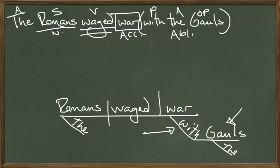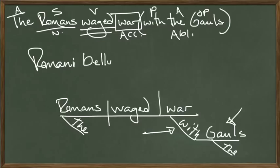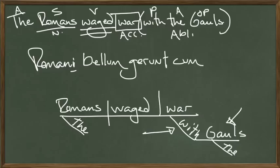Let's translate. 'The Romans' — Romani. There's a phrase in Latin for 'waged war': bellum gerere. We're going to put it in Roman word order: Romani bellum. Now we're talking about Romans — it's plural — so we use the plural verb. Romani bellum gerunt. So we now have 'the Romans waged war.' The only thing we need now is 'with the Gauls.' We need some Gauls to wage war with. So we have cum.